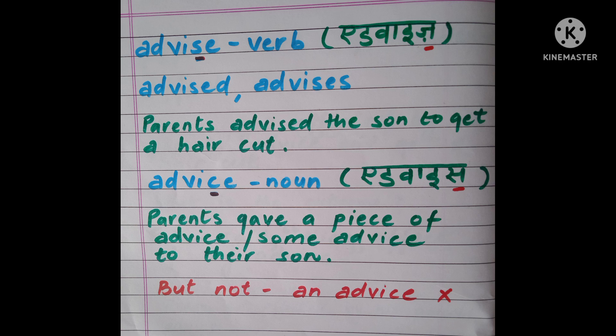So you can use 'advice' the way it was used in the video clip — like 'parents gave a piece of advice' or 'some advice to their son.' But attention, dear students: since we treat the word 'advice' as an uncountable noun, we cannot use it with 'an.' So don't say 'he gave me an advice.' Now let's watch whether Viwan got affected by his parents' advice.